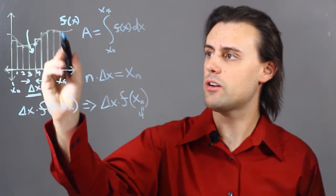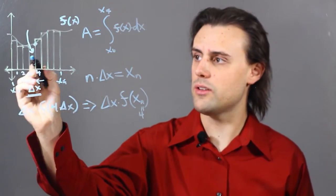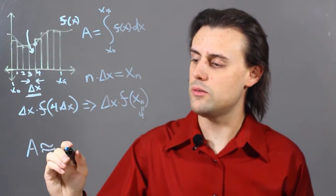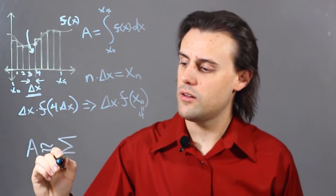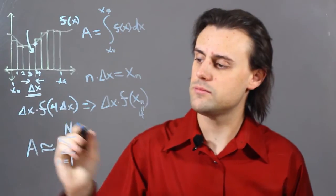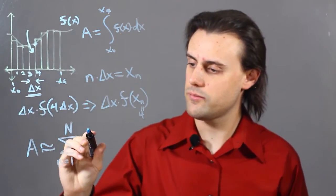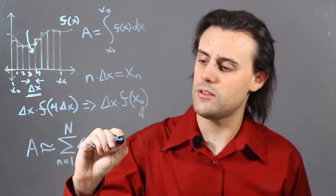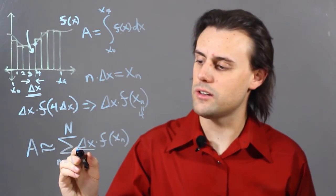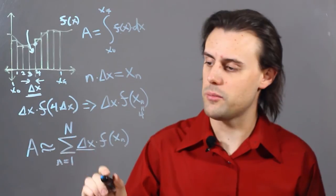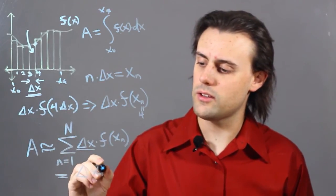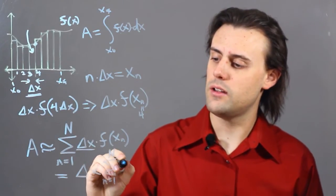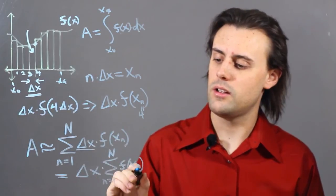Therefore, the area underneath the entire curve would be equal to a sum of the areas of each of these rectangles. So, that area, then, can be approximated to the nth rectangle, or endpoint, as the sum from n equals 1 to capital N, which is the maximum number of rectangles, in the approximation of delta x times the function evaluated at x sub n. And because this delta x is a constant, and it does not depend on this lowercase n in the summation, then this can be simplified as delta x times the sum of little n going from 1 to big N of the function evaluated at that discrete point.